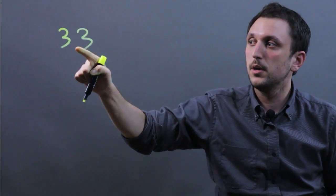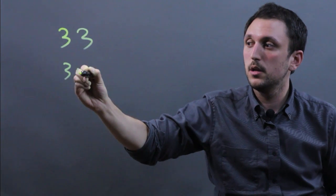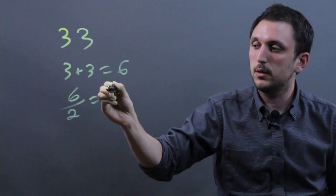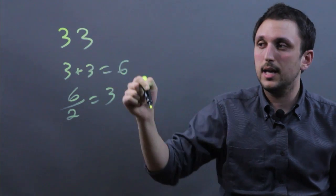So let's take the number 33. 3 plus 3 equals 6 and 6 divided by 2 equals 3. So 33 is divisible by 3.